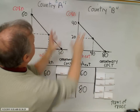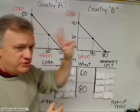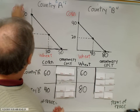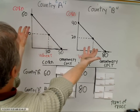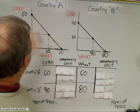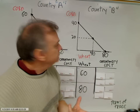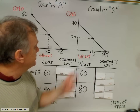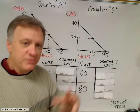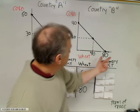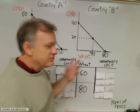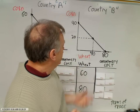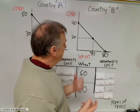Now we want to step back and ask the first two questions. First: who has the absolute advantage — who can absolutely produce more corn given their resource endowment? Just look at the numbers. Country A can produce 60, country B 40, so country A has the absolute advantage in corn. Second: who has the absolute advantage in wheat? Country B has the absolute advantage in wheat. One country could have the absolute advantage in both, but in this case each country has the absolute advantage in at least one good.